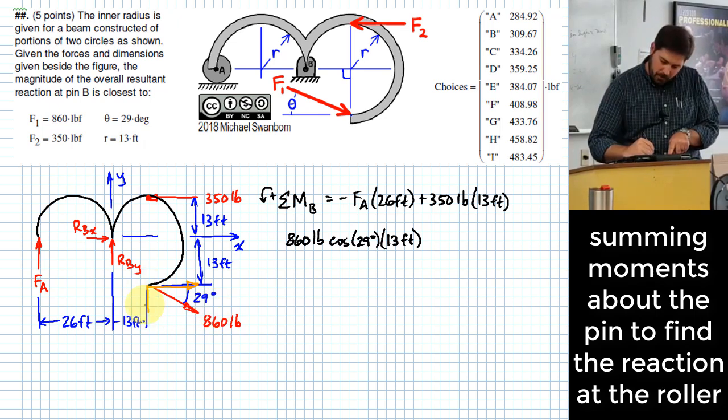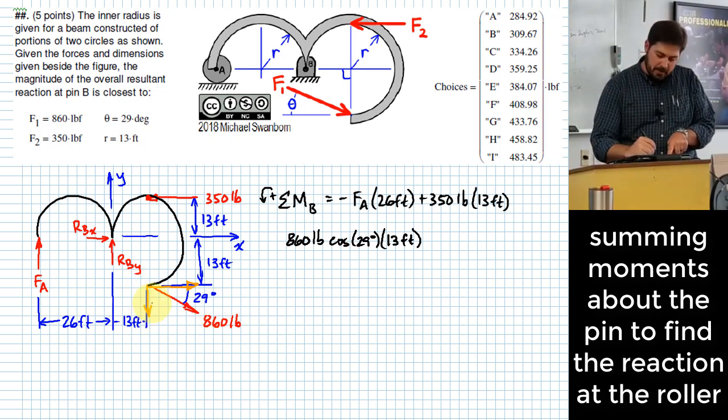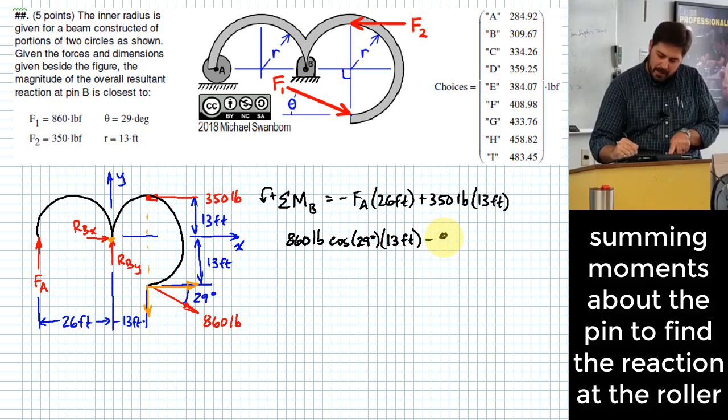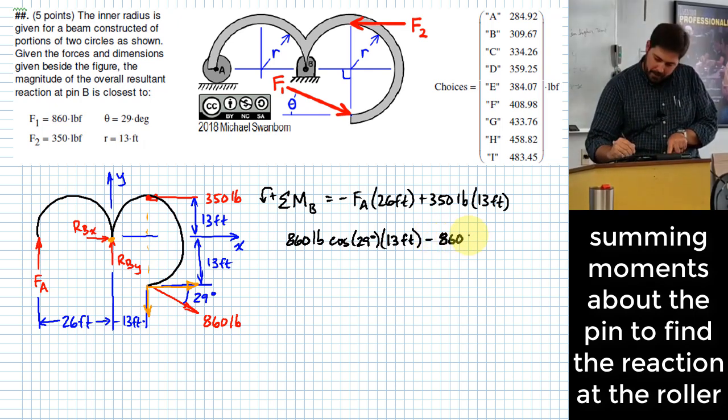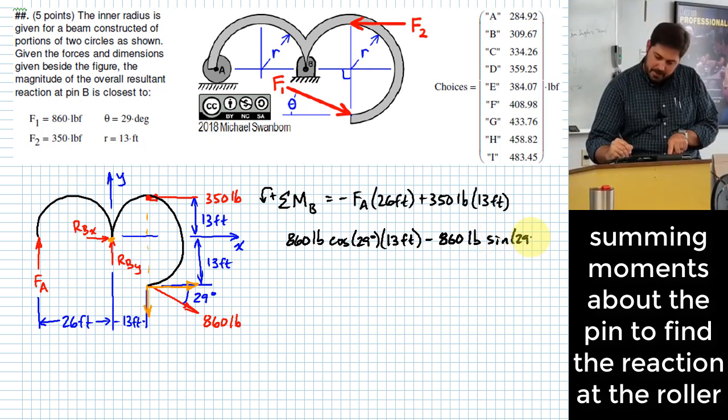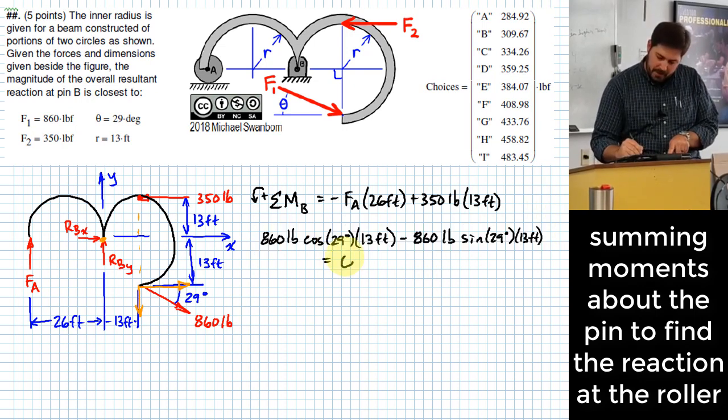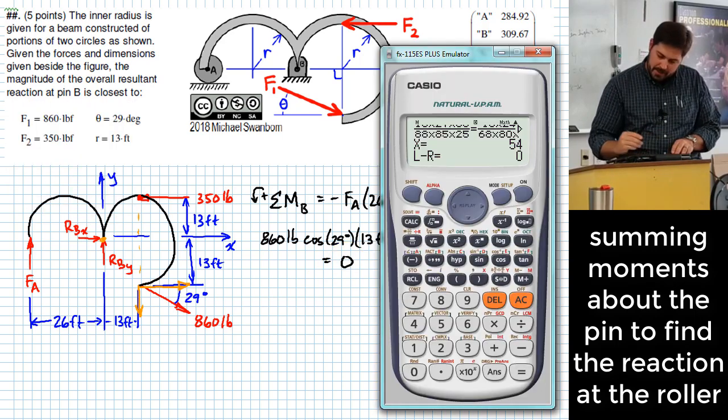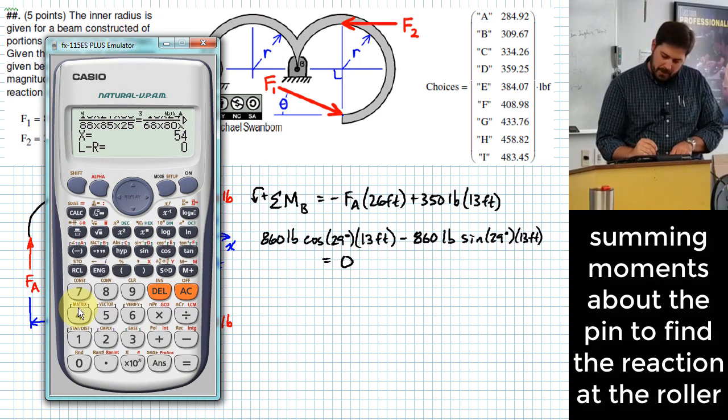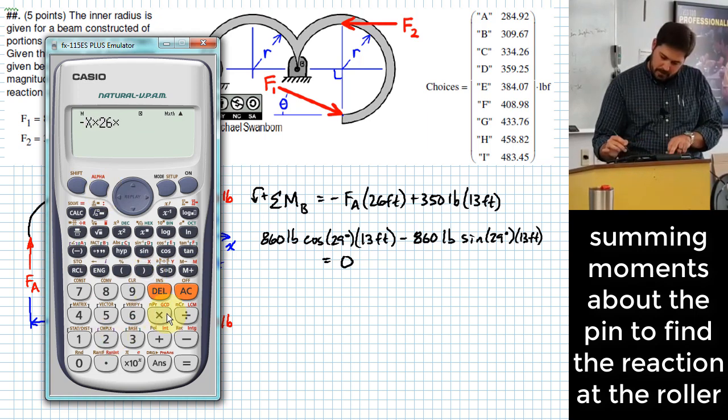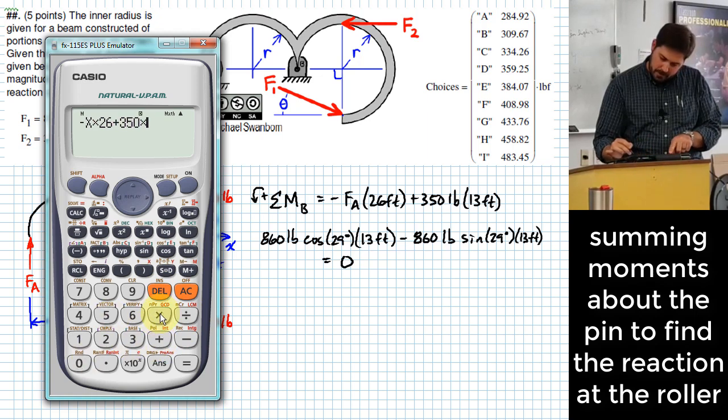Next I'm going to deal with the vertical component, which goes right there, and you'll see pushing down at a location to the right of the pivot point would have a tendency to rotate it clockwise. So someone over there suggested we do a negative, and I agree. Negative 860 pounds times the sine of 29 degrees times 13 feet gives me the influence of that vertical component. We set all this equal to 0, so we can quickly get the answer to this because the only thing I don't know is FA.